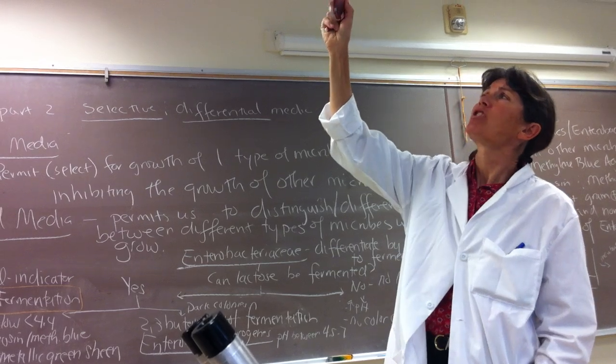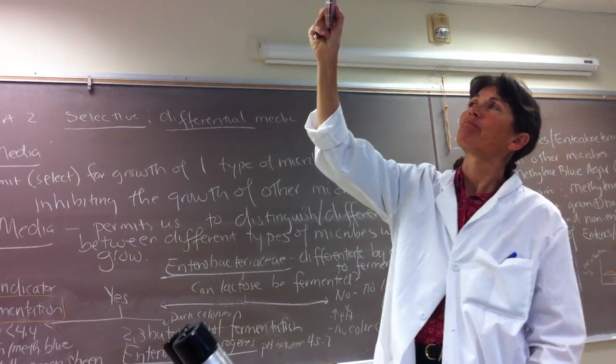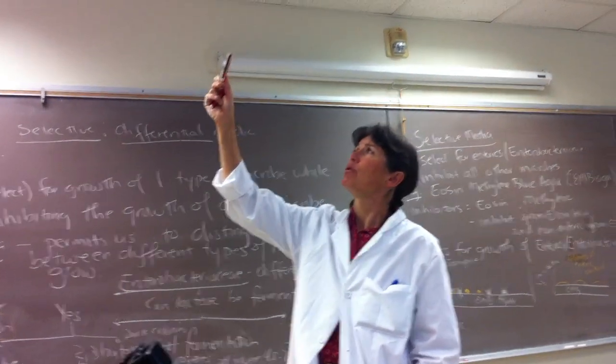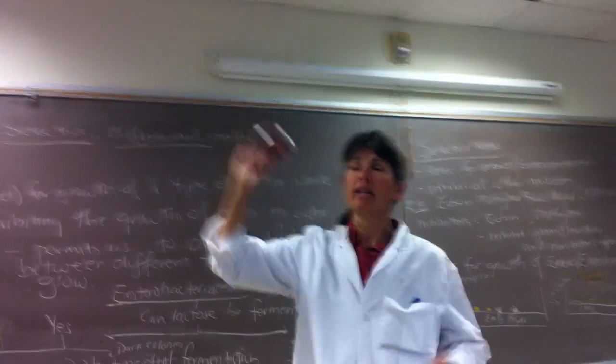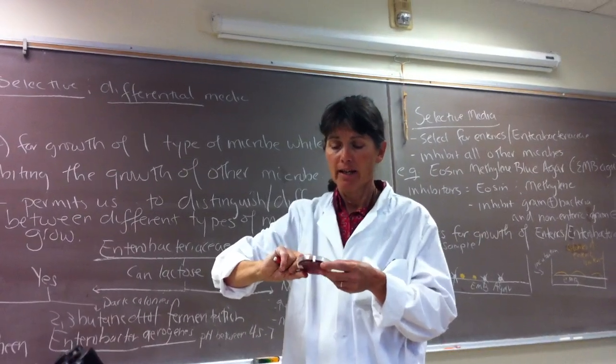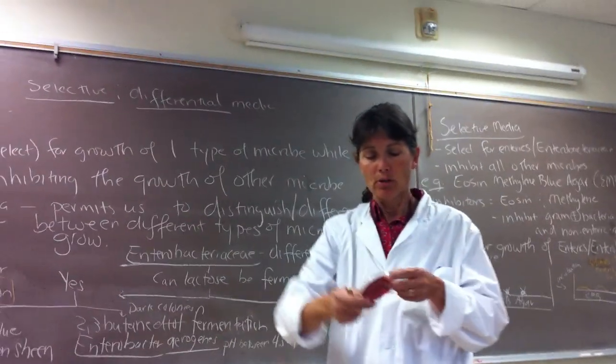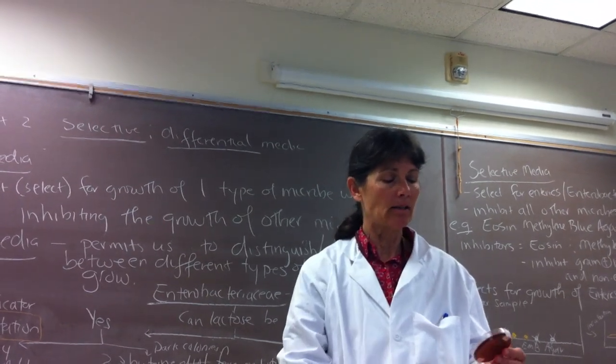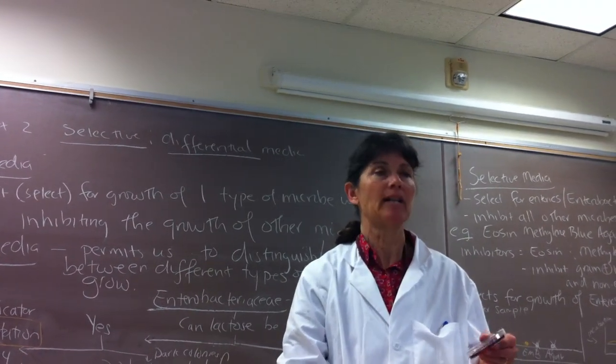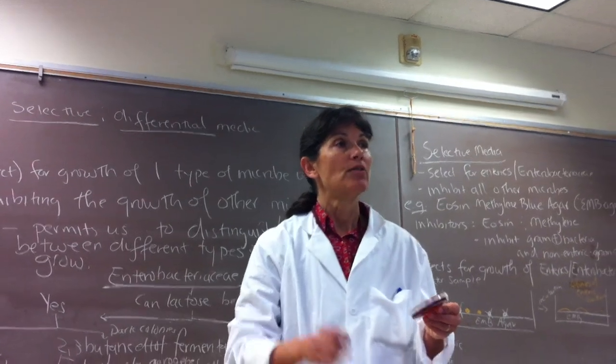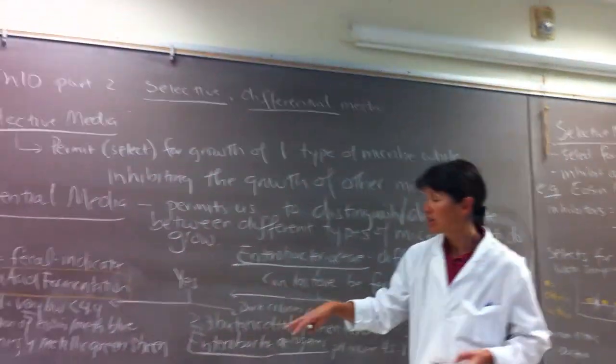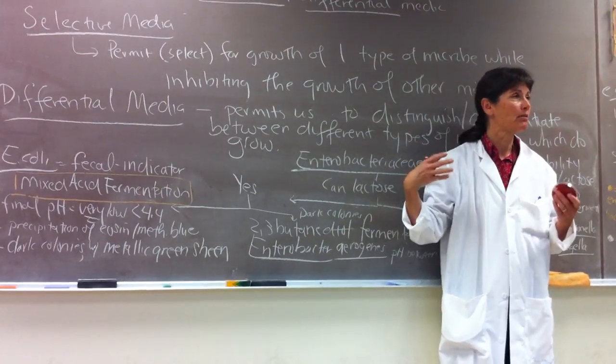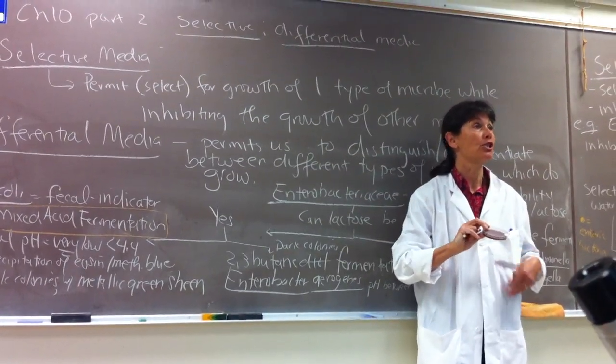And then the Enterobacter aerogenes, which is the portion of the plate labeled as C, if you hold it up to the light, you can see it is dark, right? Not as dark as the E. coli. And if you turn it over, you can see that it's appearing as kind of a dark pink color, but there's no metallic green sheen. So that is precipitation of the eosin-methylene blue, but we don't get such dramatic precipitation that we get that metallic green sheen.